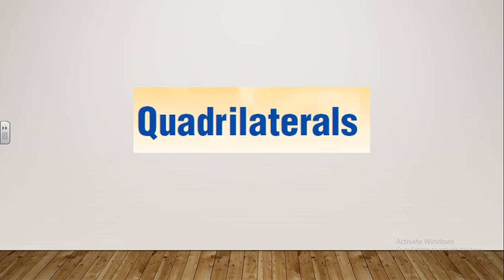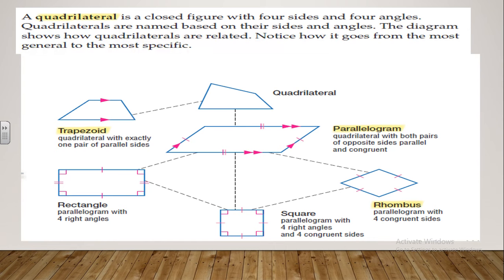Hello, dear students. Today we will talk about quadrilaterals. First of all, you need to know that a quadrilateral is a closed figure with four sides and four angles. Quadrilaterals are named based on their sides and angles.